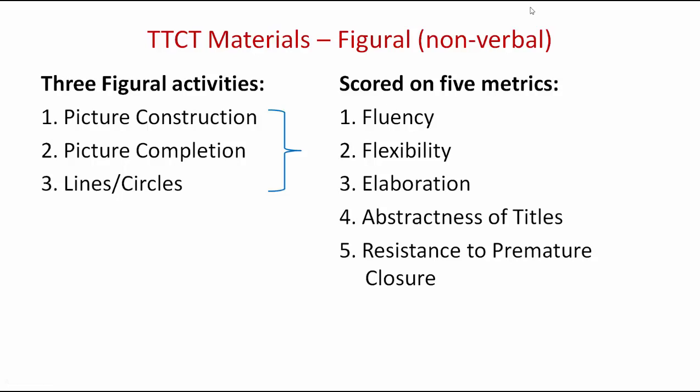Elaboration can refer to the numbers and types of responses to the given stimulus, as well as the amount of detail given in the response and the level of imagination shown by the examinee. Abstractness of titles refers to the ability of the examinee to allow the viewer — in this case the examiner — to see the picture that they are coming up with more deeply and richly. In other words, the examinee has to capture the essence of the information that is involved and know what is important to the picture.